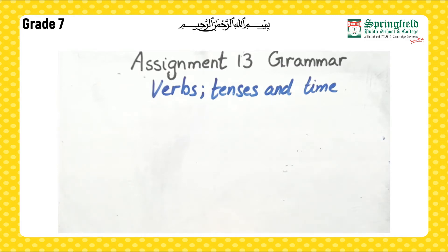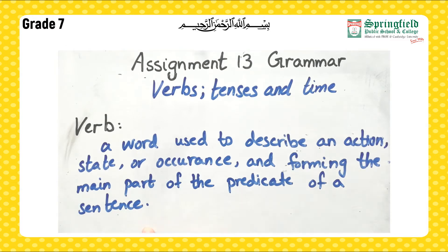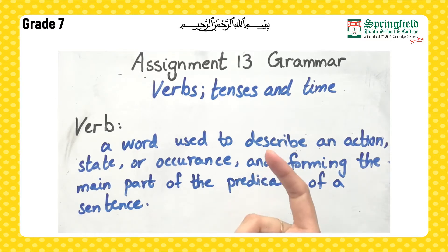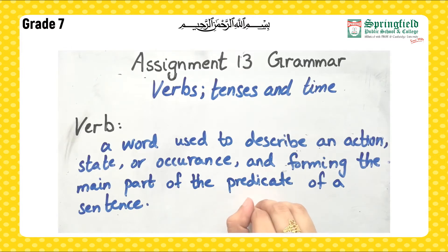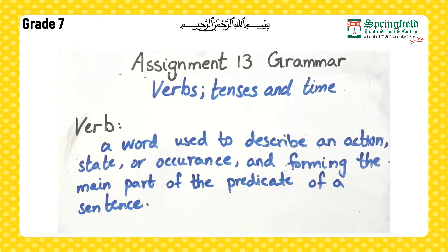First of all, what is a verb? A verb is a word used to describe an action, state, or occurrence, forming the main part of the predicate of a sentence. Basically, it describes an action, a state, or an occurrence. The predicate of the sentence is completed with the help of the verb. In simple words, verbs are the action words which help us understand the sentence or what is going on in the sentence.